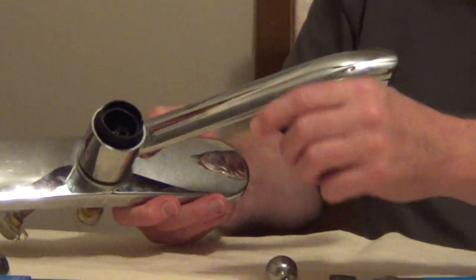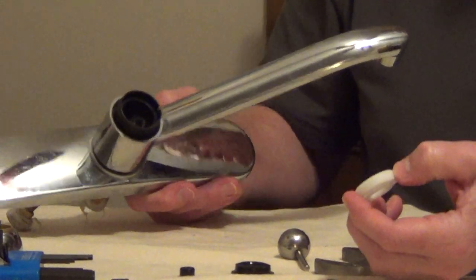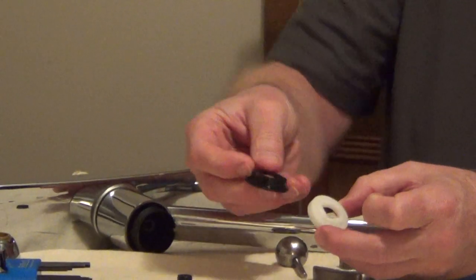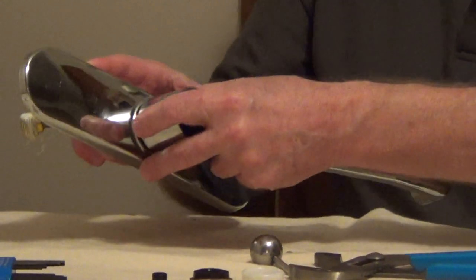Now if you have a leak out of the handle, what we're going to want to do is replace this cam washer. There's a couple styles, so again, bring this with you. This will stop a leak coming out of the handle.